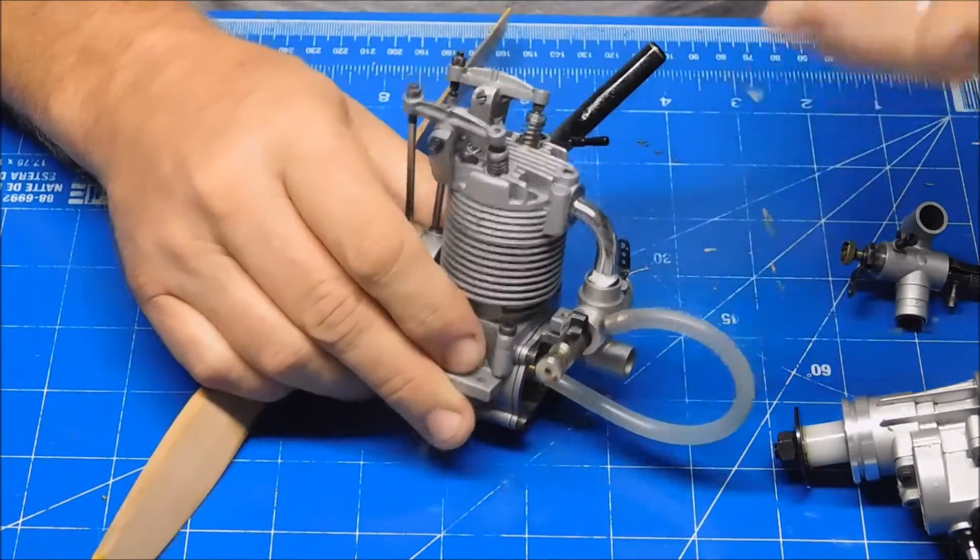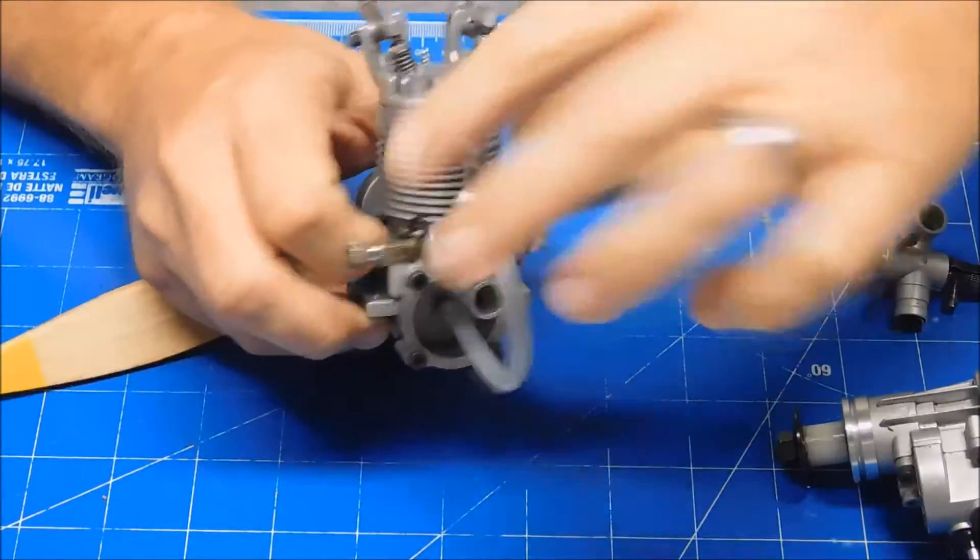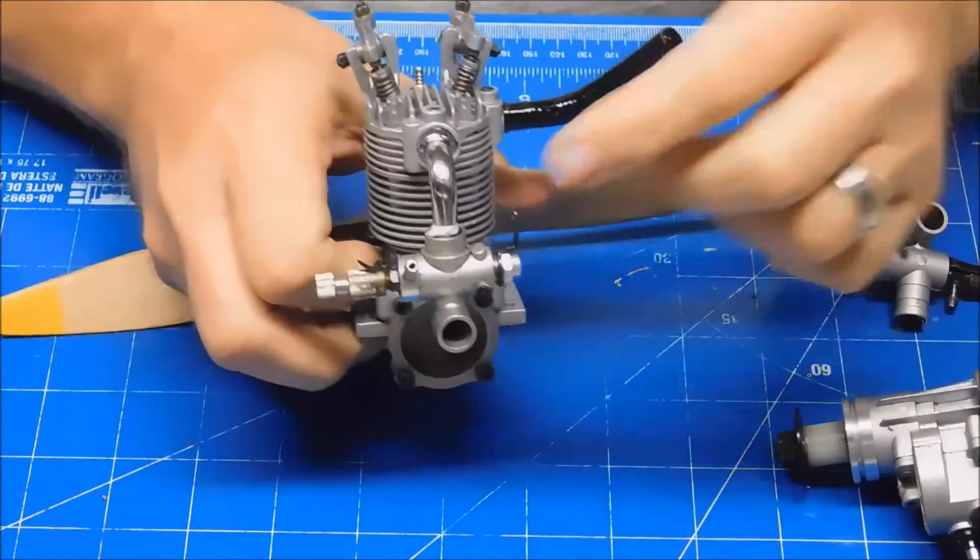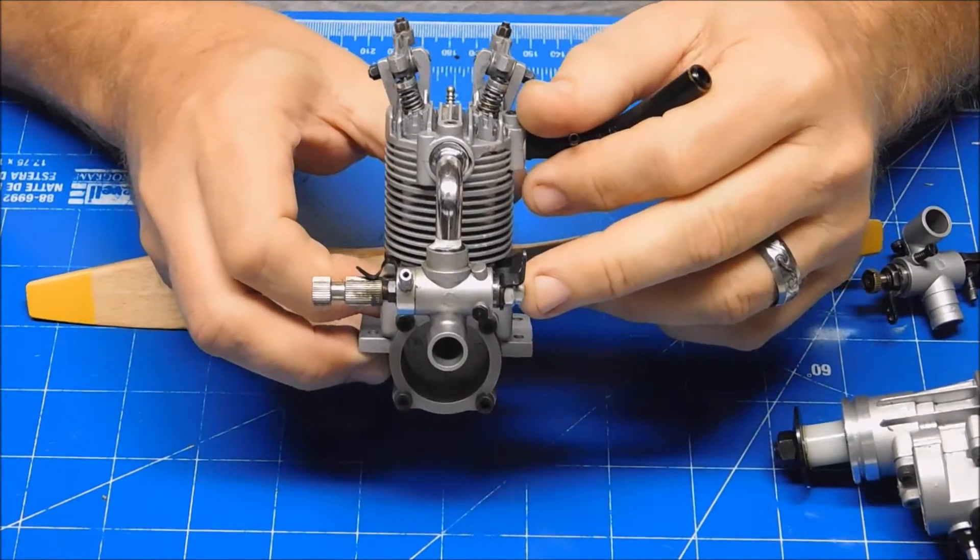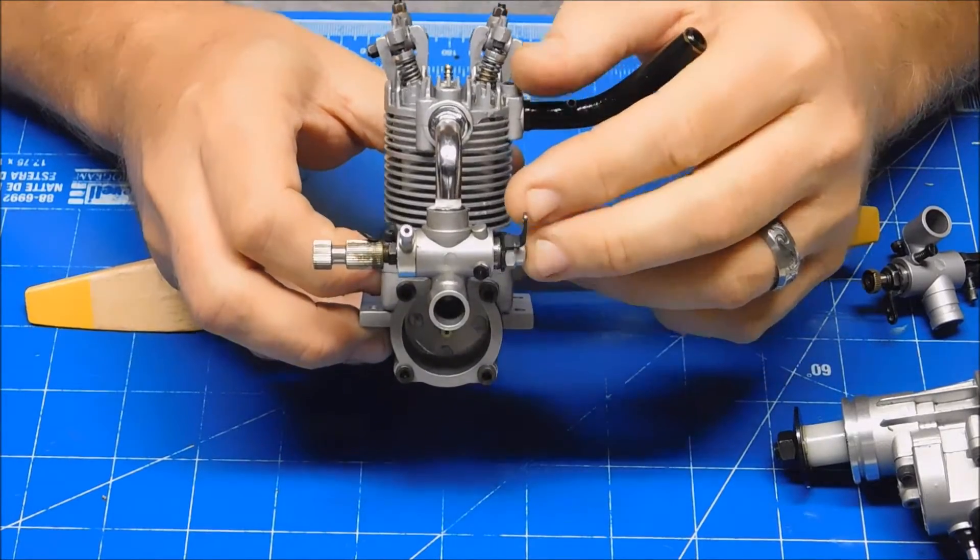So if you noticed in my last video I actually had this thing running, and I've got it running with a carburetor off of a different vintage Sato FA45 engine.